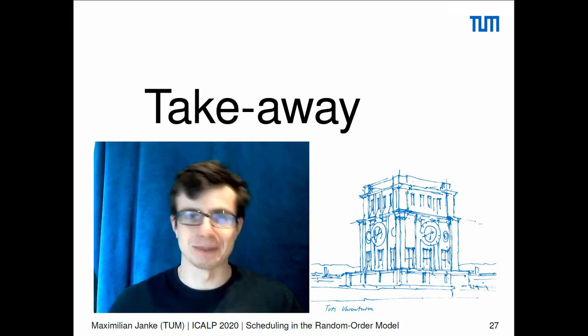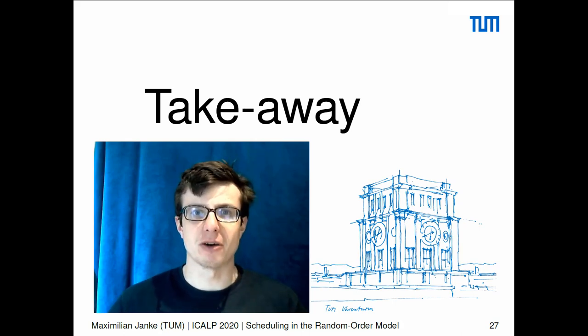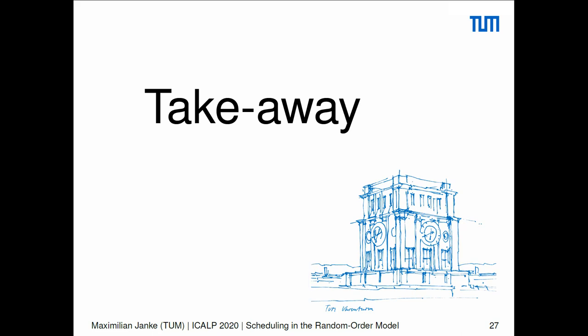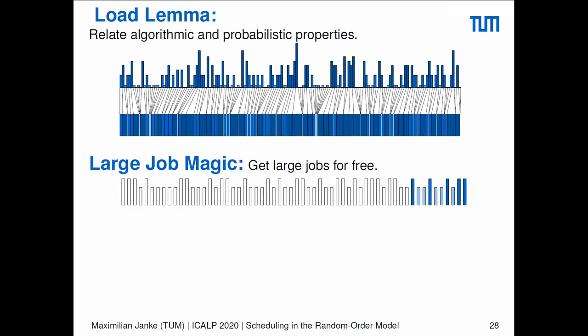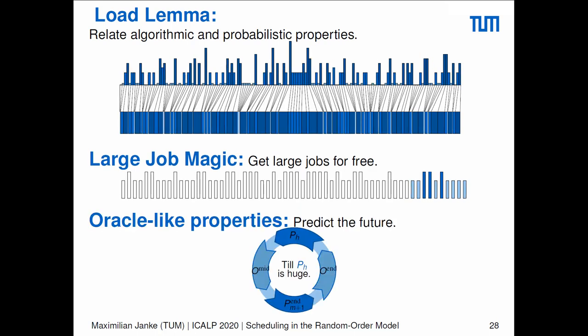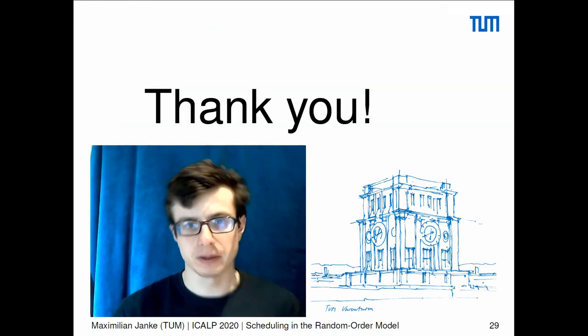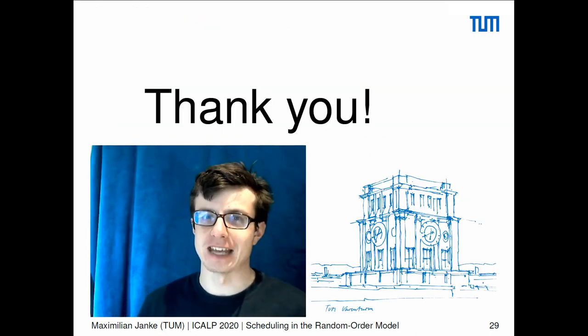So this concludes the talk. Let me briefly summarize how random order arrival helps. First, there is the load lemma, relating algorithmic and probabilistic properties. Second, large-job magic allows us to get jobs for free in ways which would be unthinkable in adversarial settings. Finally, there are oracle-like properties which give the setting a very subtle taste of semi-online scheduling. With this being said, I hope you enjoyed my talk and thank you for your attention.